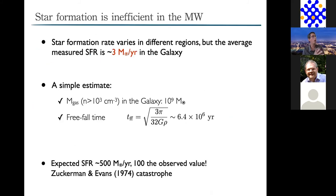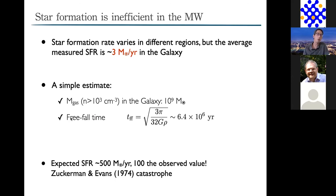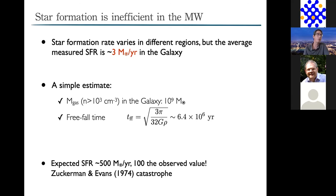The first challenge in star formation is the star formation rate problem. The observed star formation rate in the galaxy is a few solar masses per year. If we estimate the time to convert all the dense gas into stars within a free-fall time, we get an expected star formation rate of about 500 solar masses per year—100 times the observed value. This has been called the Zuckerman events catastrophe, and we need to find mechanisms to make star formation inefficient in the galaxy.